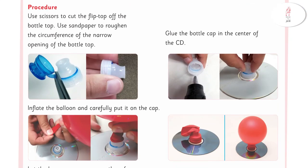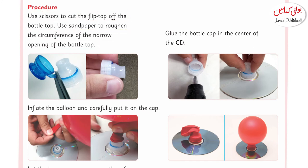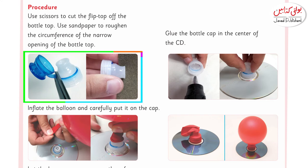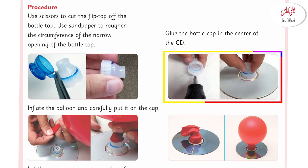The procedure is: use scissors to cut the flip-top off the bottle cap. Use sandpaper to roughen the circumference of the narrow opening of the bottle top — aap ne sandpaper se uski surface ka circle thoda rough texture mein karna hai. Then glue the bottle cap in the center of the CD — aap CD ke center mein is cap ko glue ki madad se join kar dein.